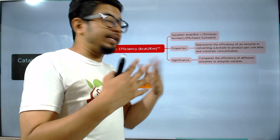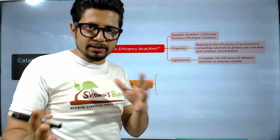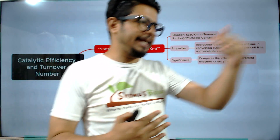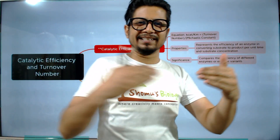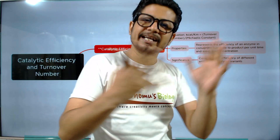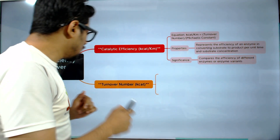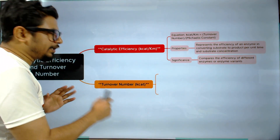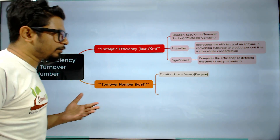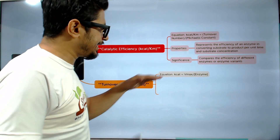The significance of catalytic efficiency is that it allows us to compare the efficiency of different enzymes or enzyme variants to each other. We can compare that enzyme X is better than enzyme Y, or Z is better than X, and so on.